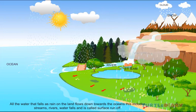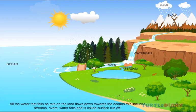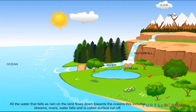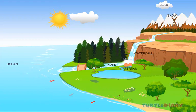All the water that falls as rain on the land flows down towards the oceans. This includes streams, rivers, waterfalls, and is called surface runoff. Thank you.